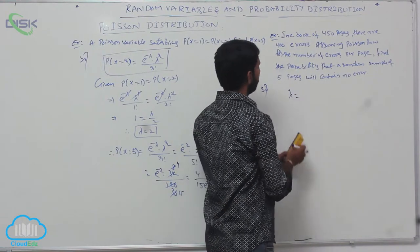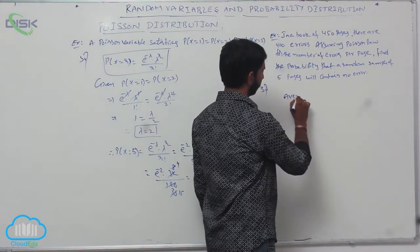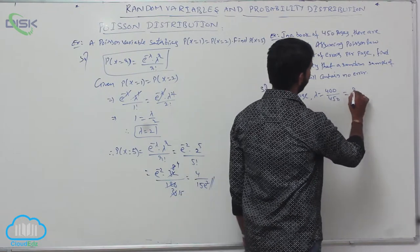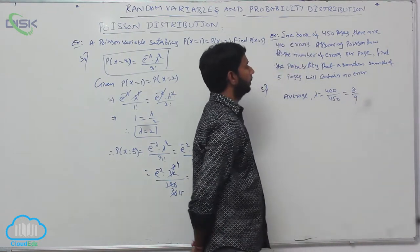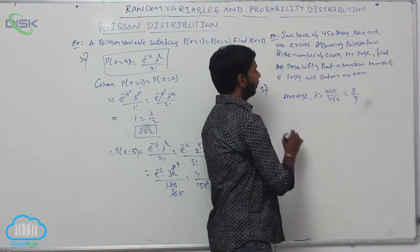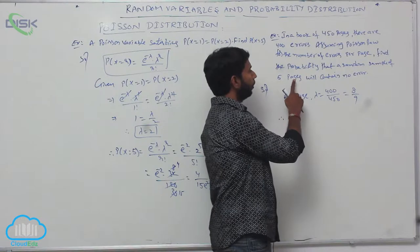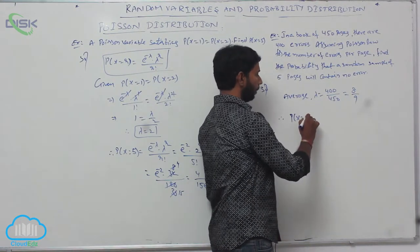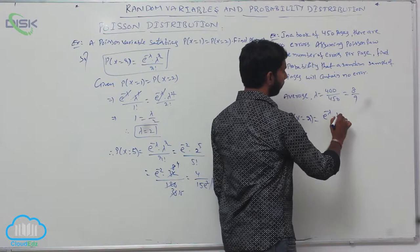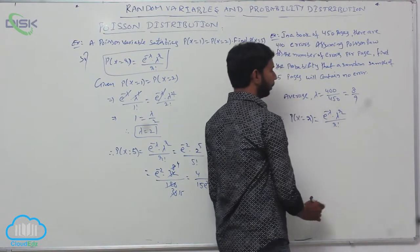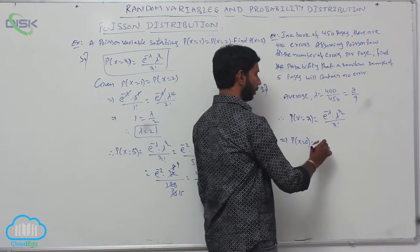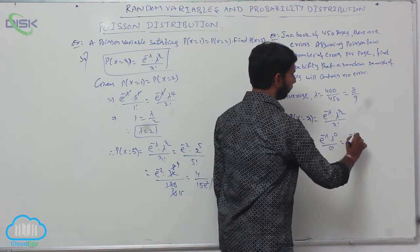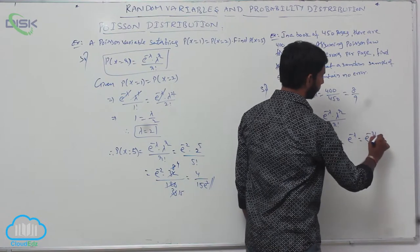Here, the average lambda is equal to 400 by 450, which is equal to 8 by 9. The probability that a page contains no error is P(x=0). For Poisson distribution, P(x=0) = e power minus lambda into lambda power 0 by 0 factorial, which equals e power minus lambda, equal to e power minus 8 by 9.